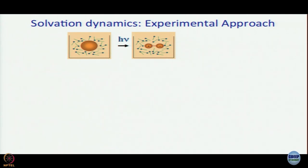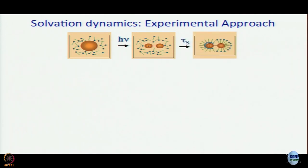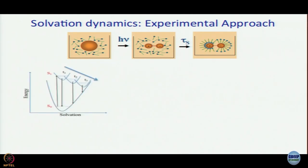This excitation takes place on an ultrafast timescale — that is not enough time for the solvent molecules to reorient. Given enough time, the solvent dipoles would reorient around the two poles of the newly created solute dipole, and you would get a favorable situation. Due to favorable dipole-dipole interaction, you are going to get a stabilization of the excited state.